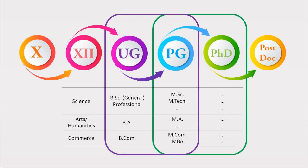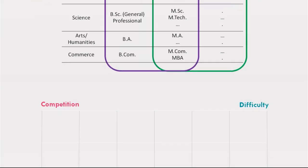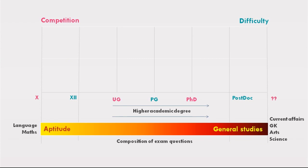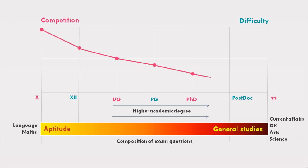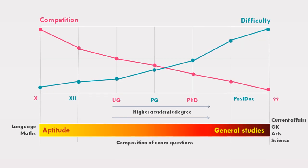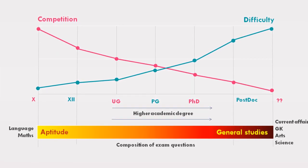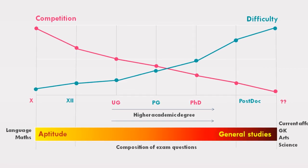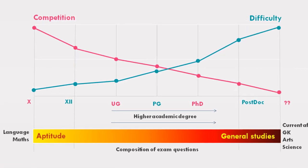From Class 10 through exams at different stages, the nature of competition and difficulty varies. At the higher levels such as postdoc or PhD candidacy, you will have very less competition. The competition and difficulty running together, the exam structure and entry position are key considerations.